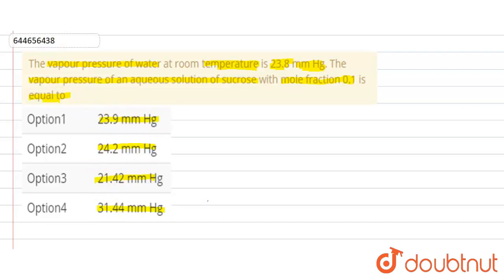We have these options. In the question, we need to find the vapor pressure of an aqueous solution of sucrose. First, we'll write what we have given. We have the vapor pressure of H2O, which is P⁰ = 23.8 mm Hg. Next, we have the mole fraction.